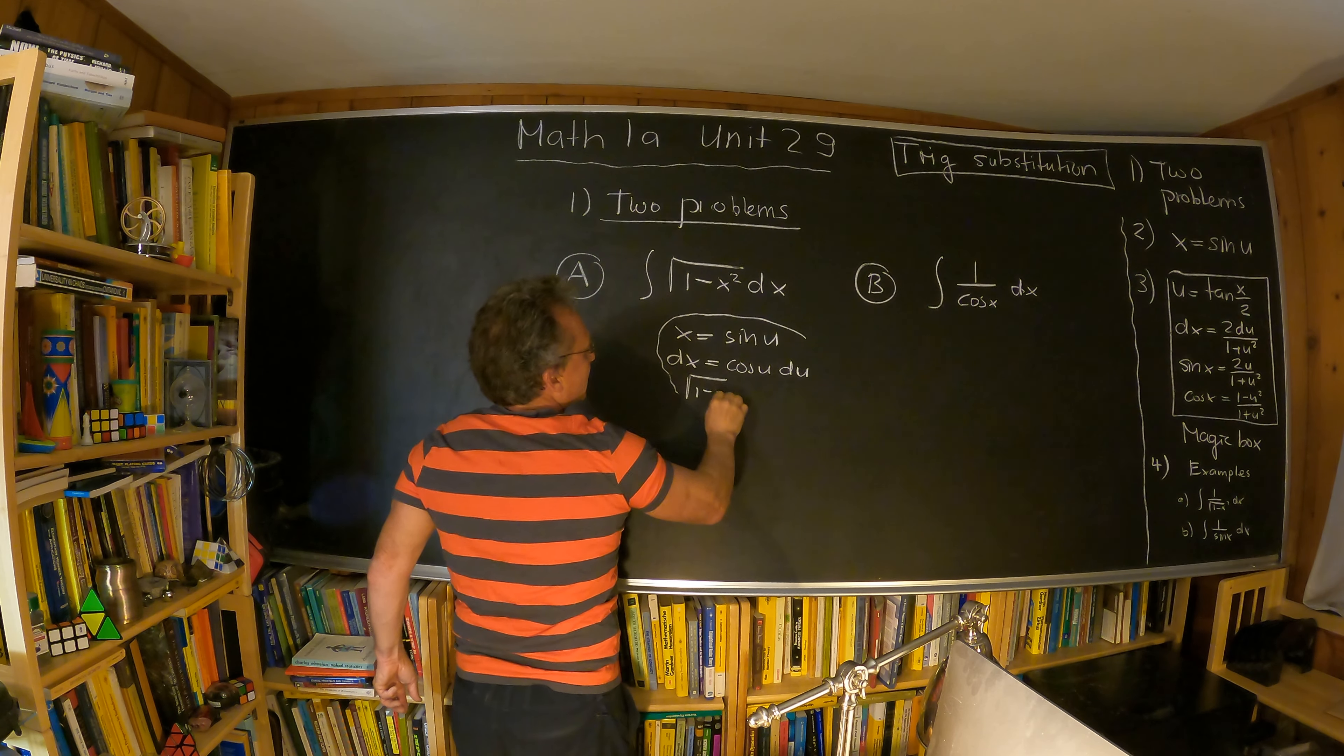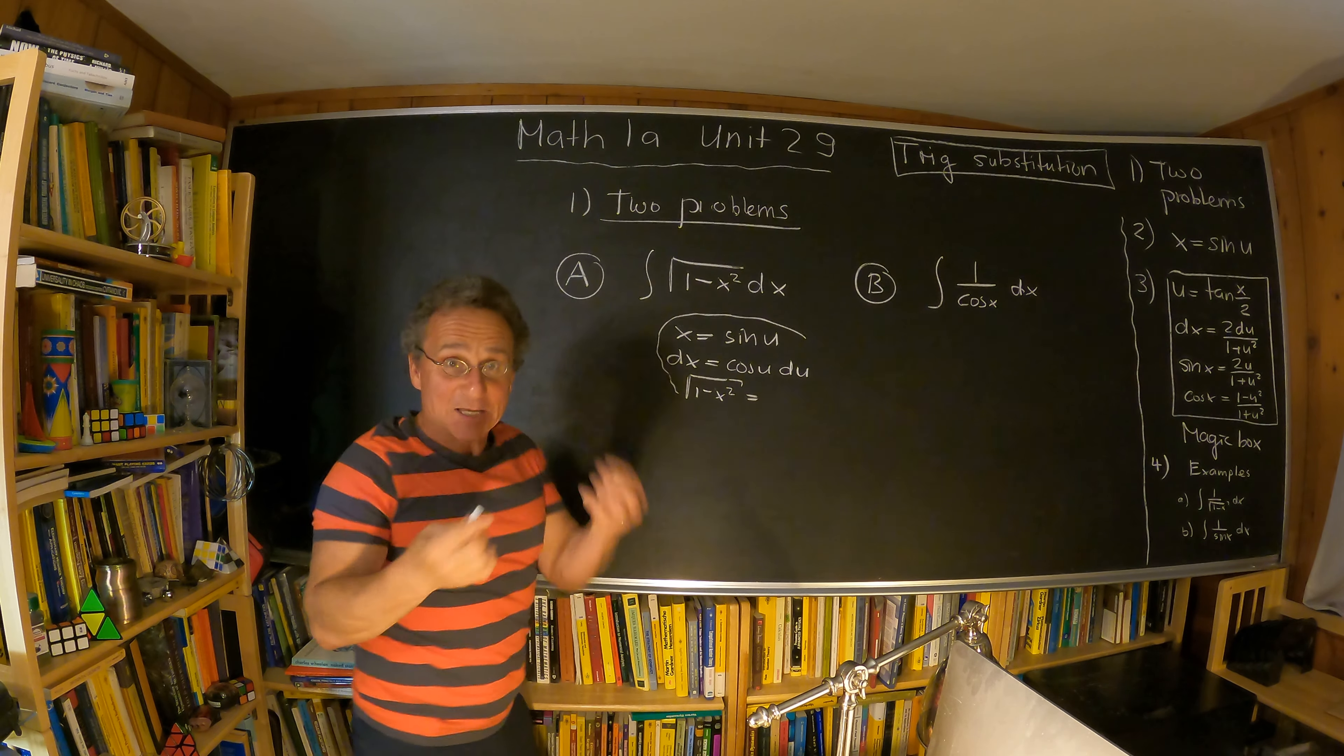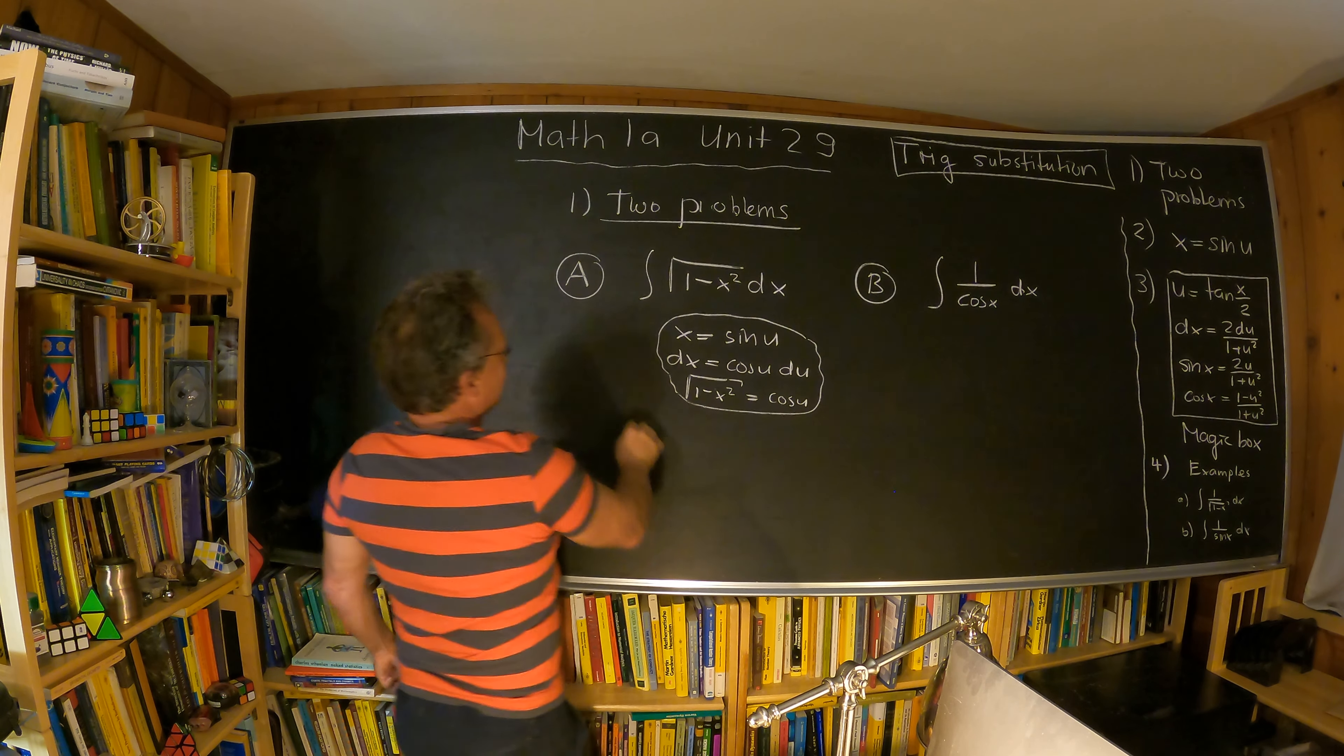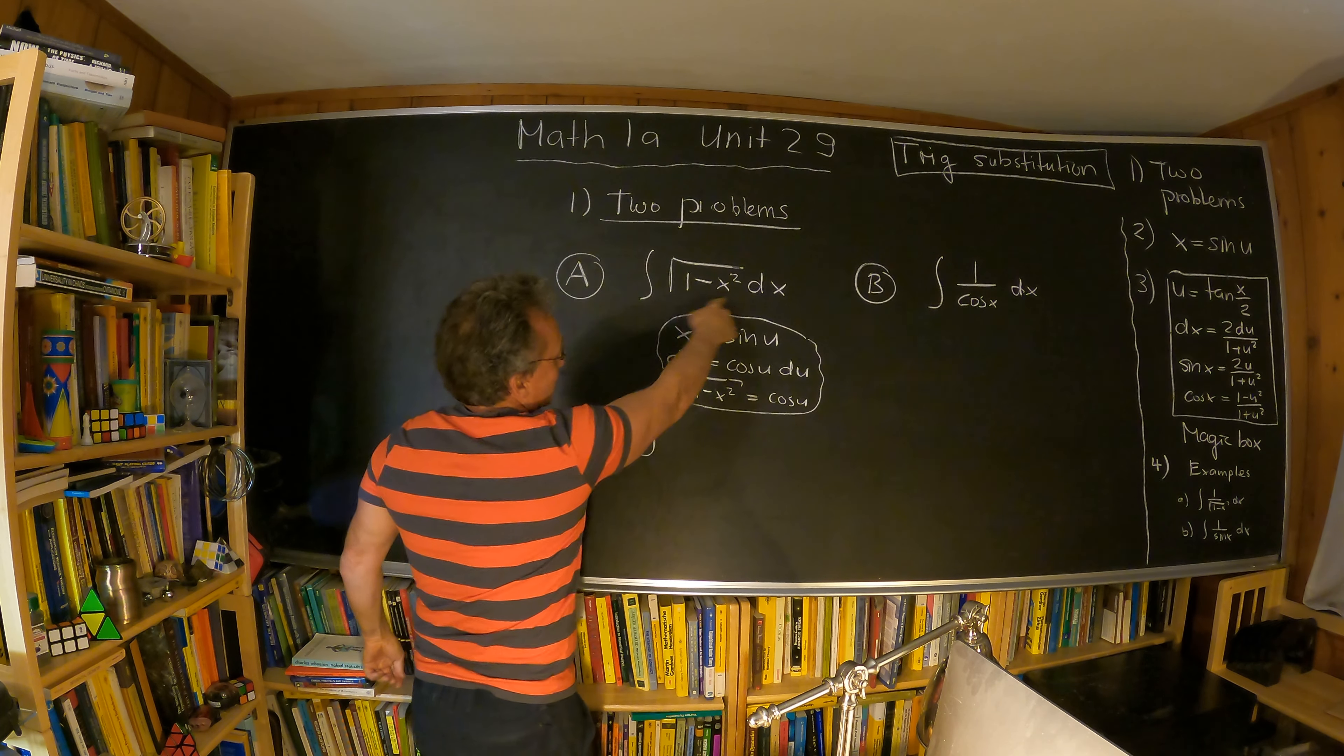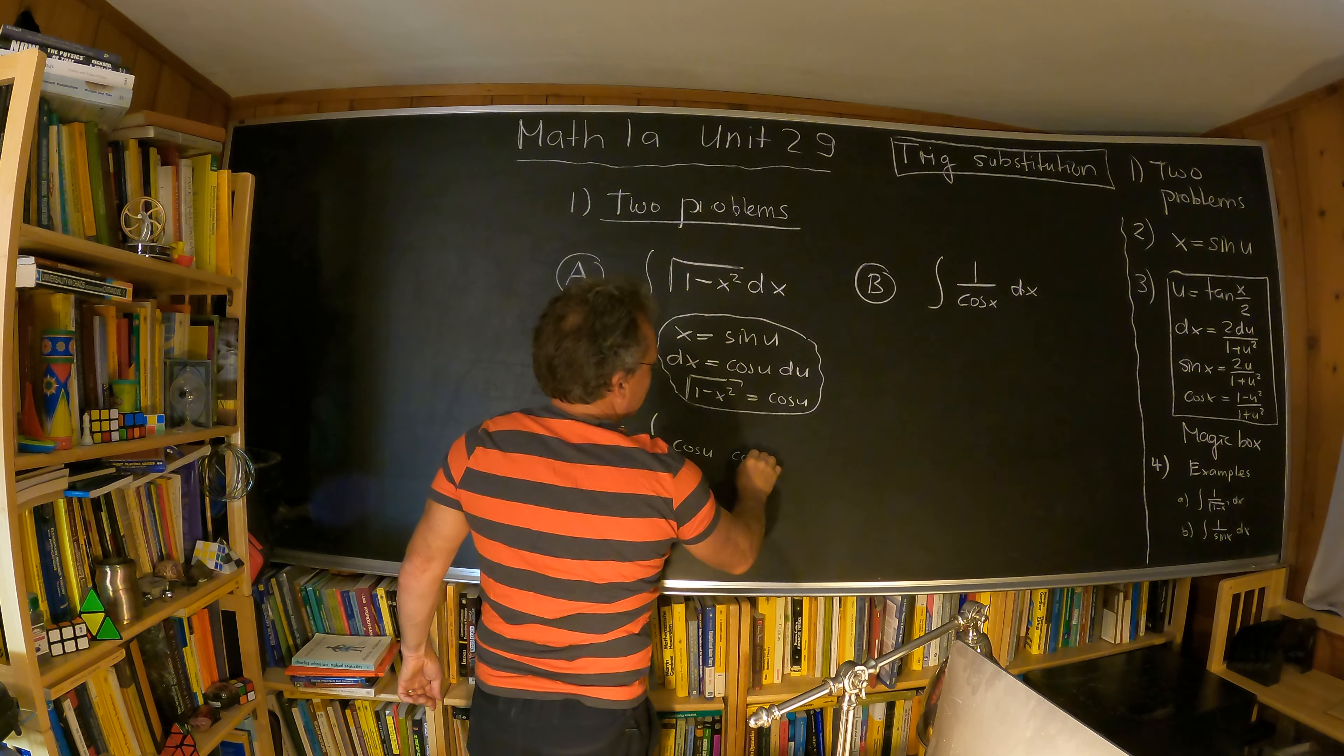And maybe I just write down also, one minus x square square root is one minus sine square u, and that's just cosine u. And we see that this problem is now very simple because we have just the square root of one minus x square is cosine u, and the dx is also cosine u.